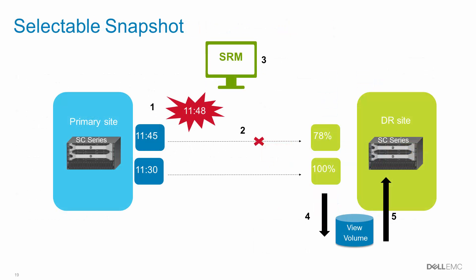We also support a unique feature called Selectable Snapshot. Given the variety of replication offered by SC-Series arrays, we may have frozen snapshots replicated to the DR site, synchronously replicated volumes, or both.